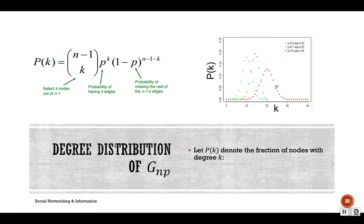For this model, we are going to calculate three key properties: degree distribution, average path length, and average clustering coefficient. At the end, we are going to compare the results of our real-world MSN graph with the reference graph model. The idea is that this model is so simple that these calculations are also very straightforward.